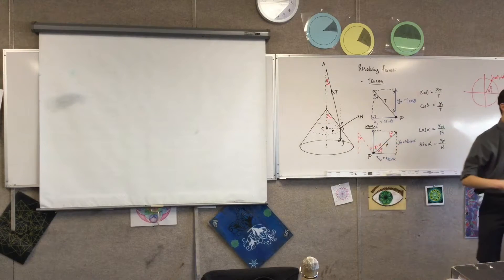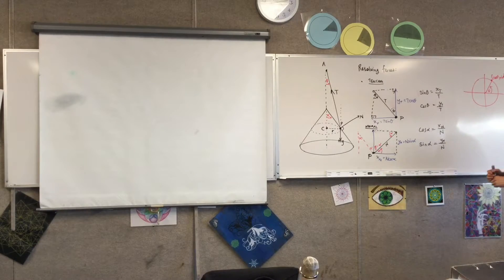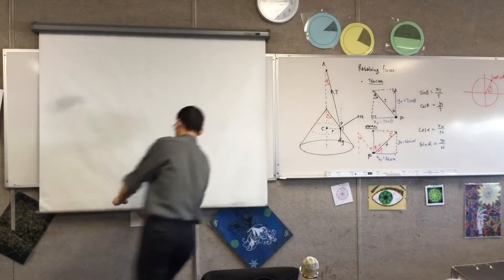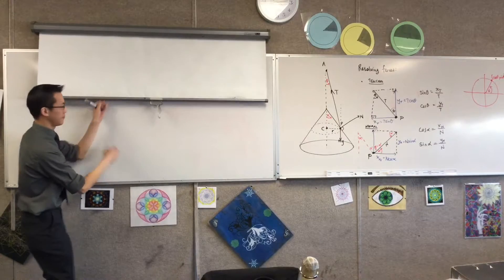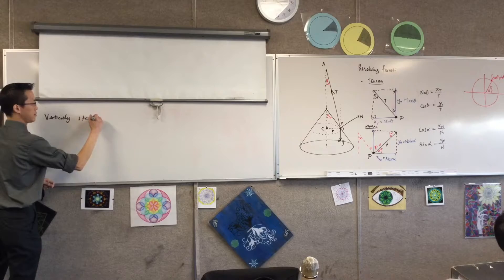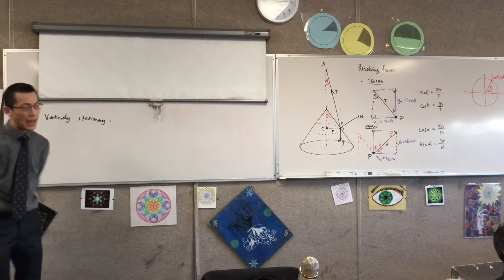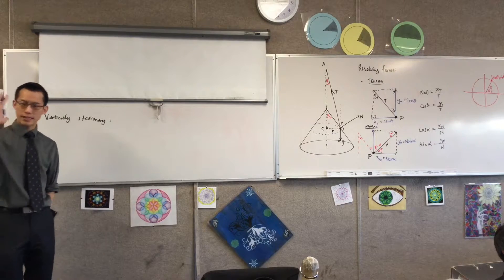So I'm going to look at all of the vertical forces I have, all of them, including this guy. And if I add them all up, including their directions, they should all add to zero. Okay? I'll use this. This is enough space. So I'm going to say vertically, stationary. Okay? So then have a look. How many forces can you see that are oriented up and down?